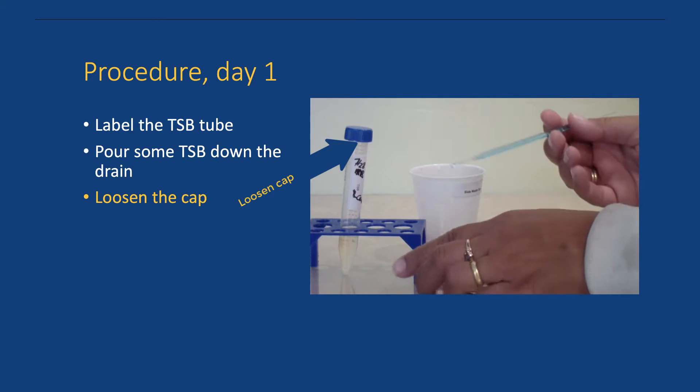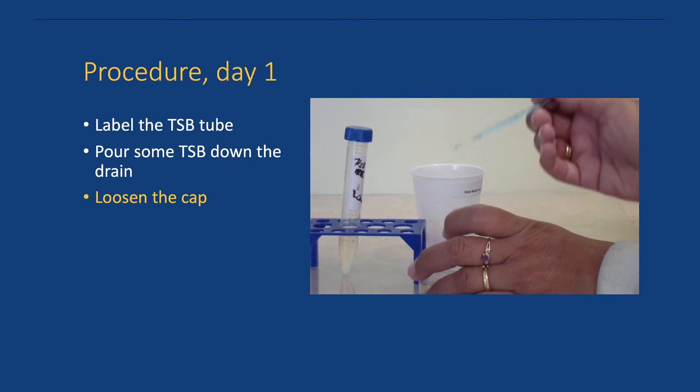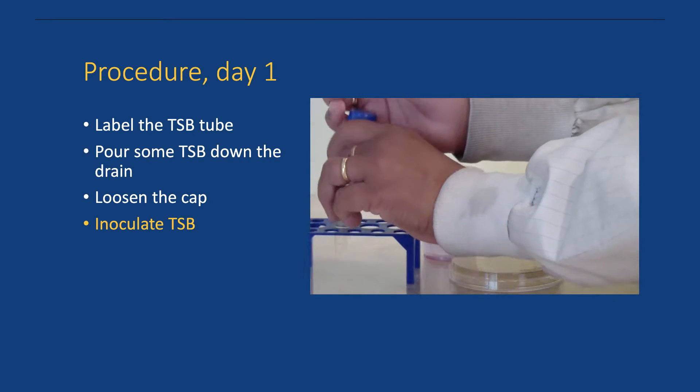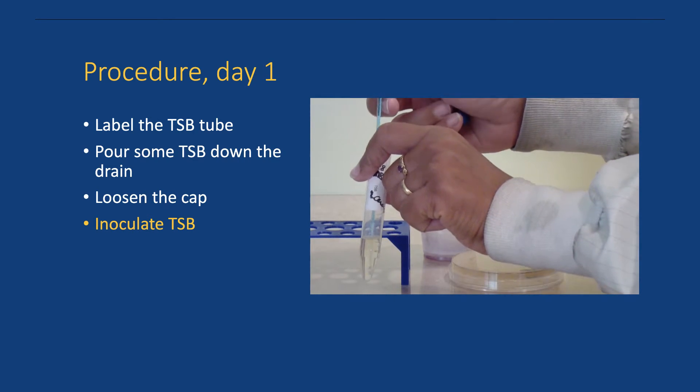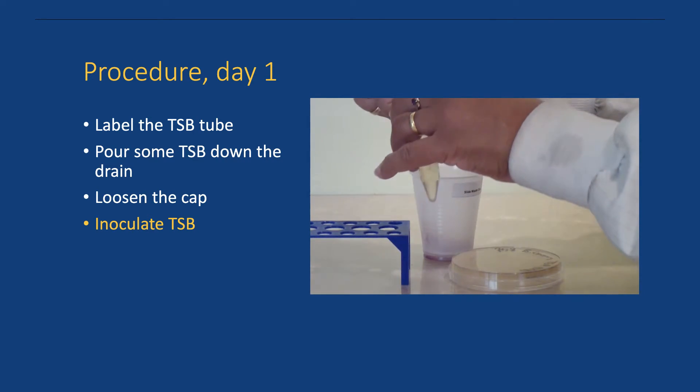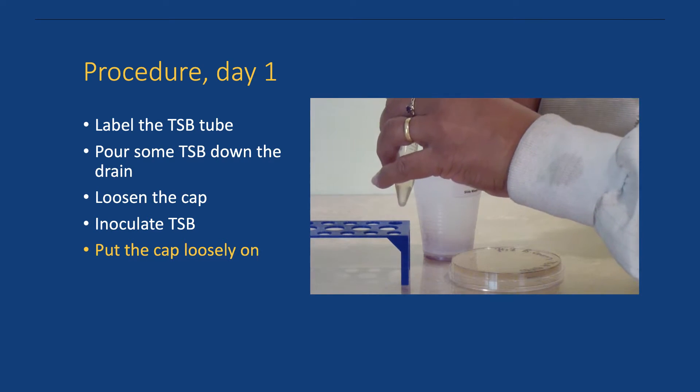Loosen the cap on the TSB tube. With an inoculation needle or loop, touch a bacterial colony on a plate. Be sure to touch only one colony. Inoculate the broth and replace the cap loosely to allow air exchange.